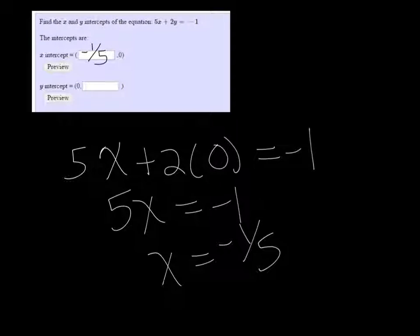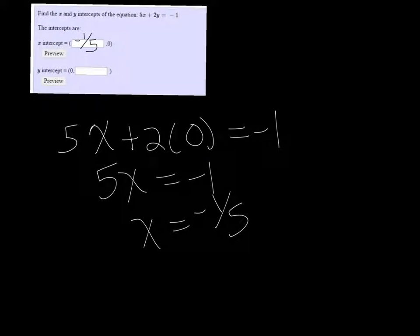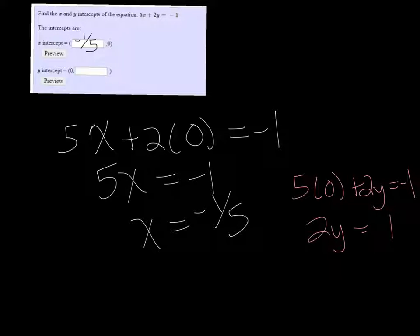And to get my y-intercept, I want to put 0 in for x and then solve for y. So I get 2y equals negative 1, so y must be negative 1/2.